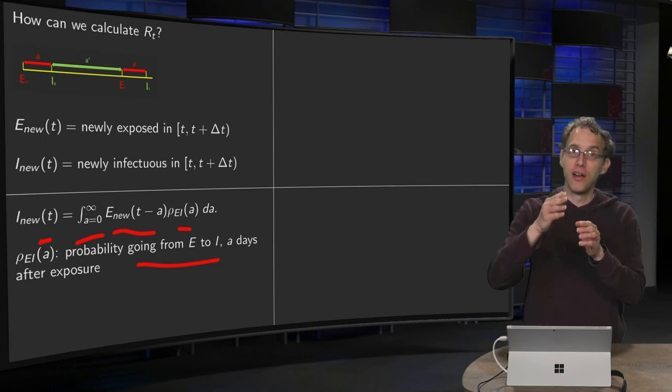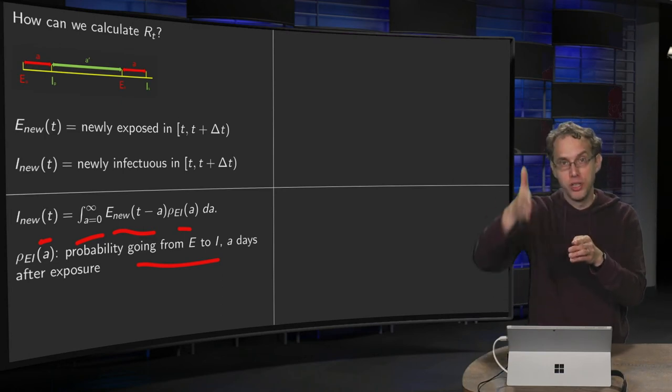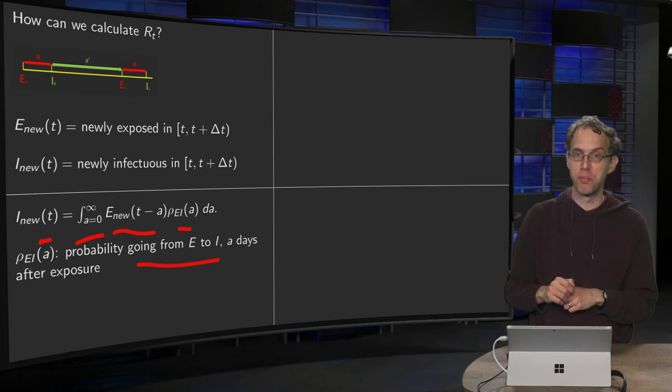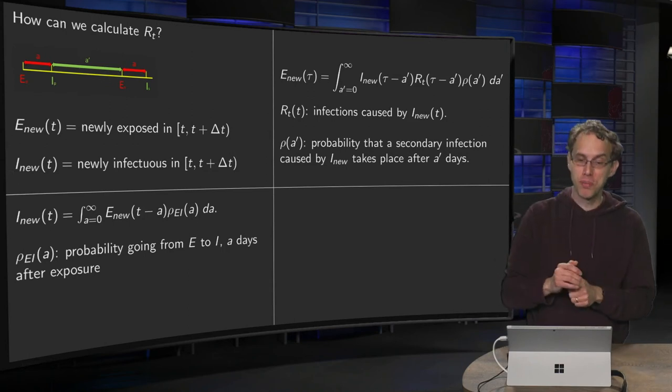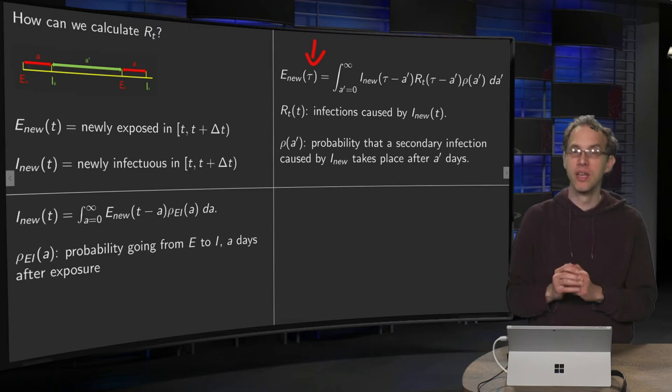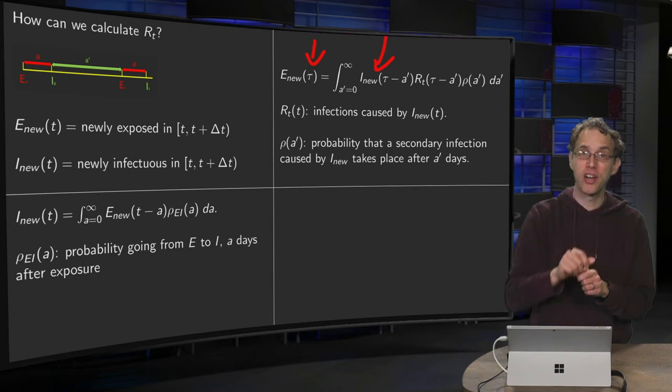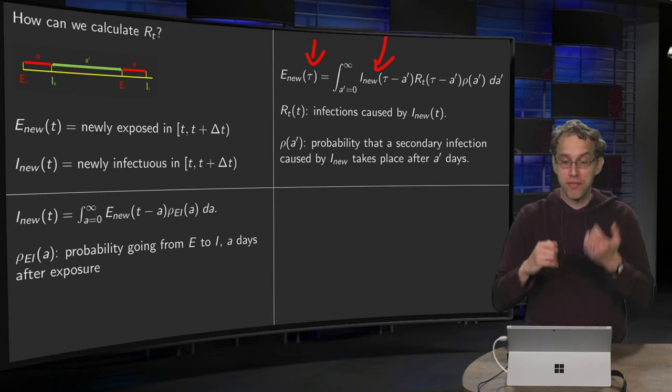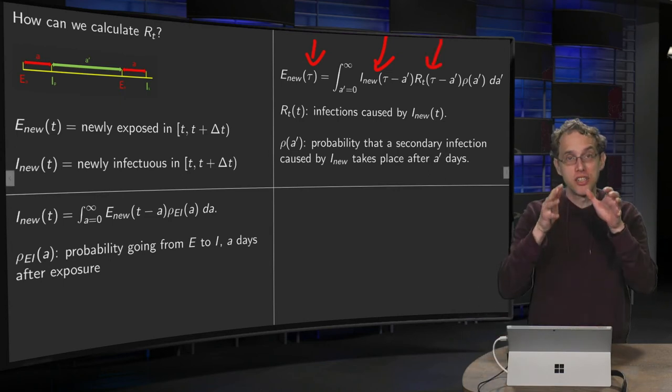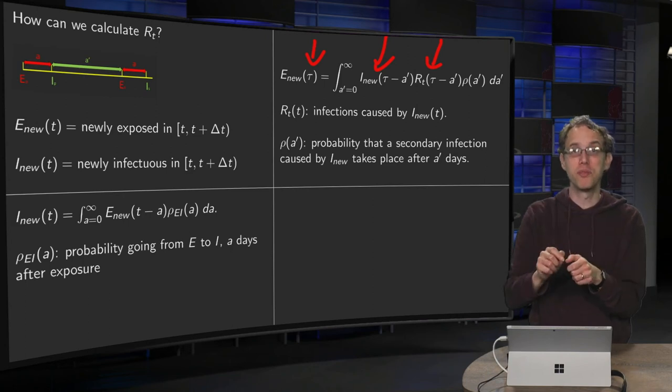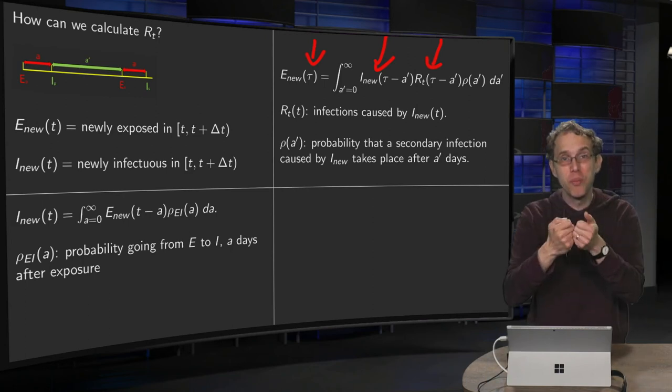Now for the next step, going from the infectious to the newly exposed, there we will find our reproduction number. So how many newly exposed people do we have at t equals tall? Now this is due to the people who got infectious a prime days earlier, and they infect the reproduction number, that's the number of people they infect, so you get the newly infected a prime days earlier, times the reproduction number a prime days earlier, gives the number of newly exposed people.